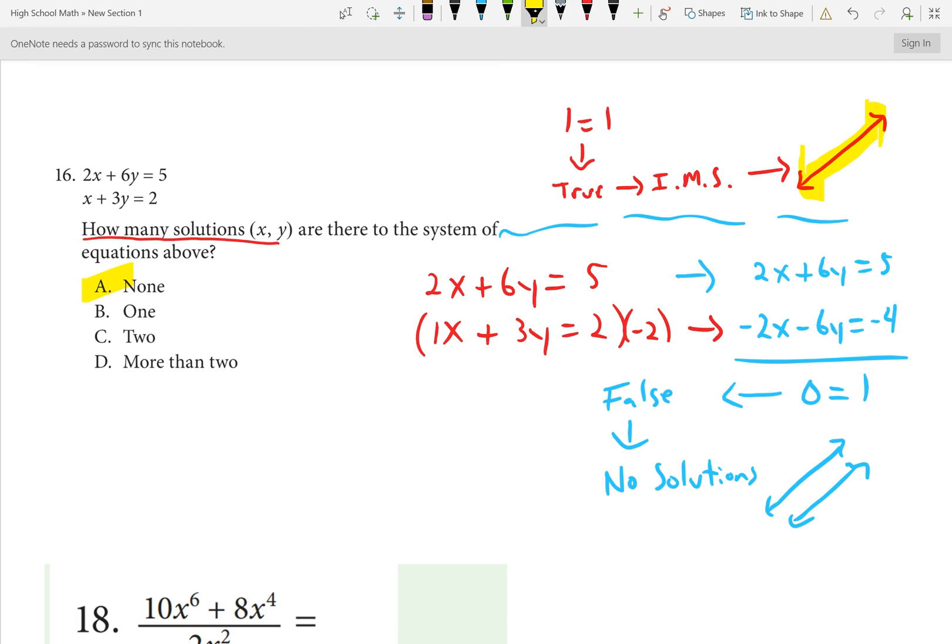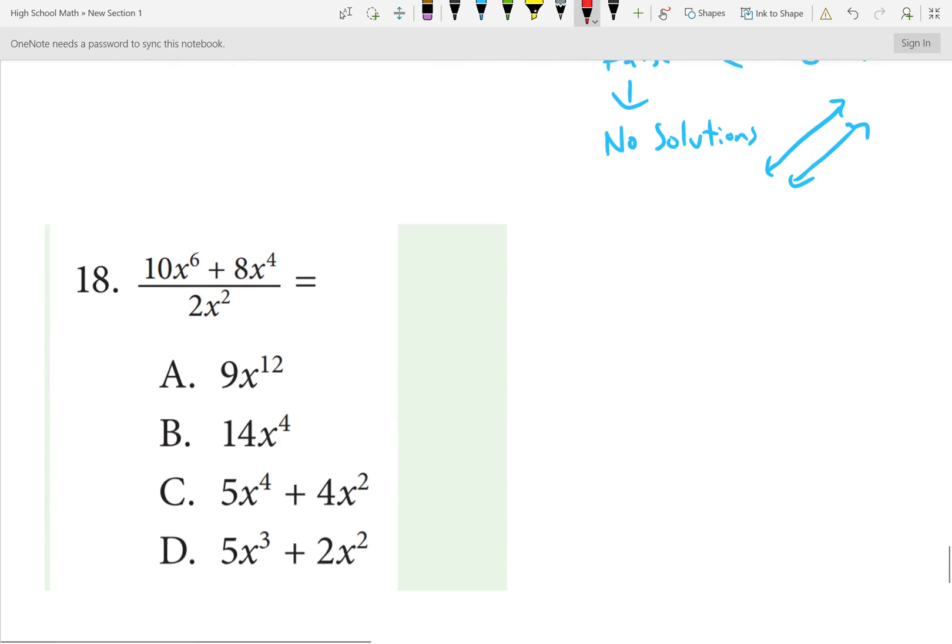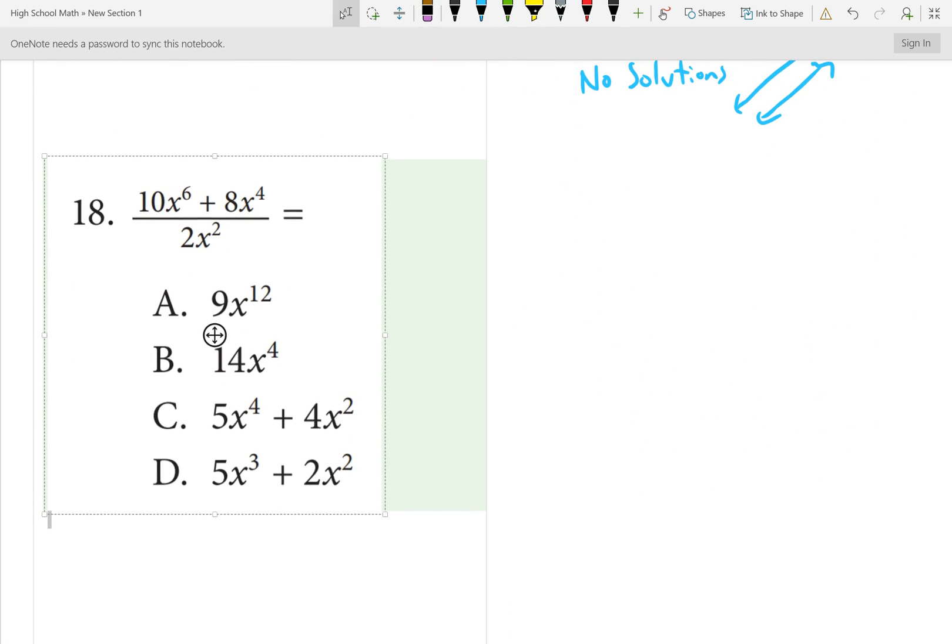Number 18. Another factoring problem. When factoring, the first thing we look for is a GCF. So in the top, the numerator, hopefully you see the GCF will be 2X to the fourth power because 10, 2 goes into 10 and 8. And when you're dealing with the variables, if they both have the variable, go to the least and take it all. 10 divide 2 is 5. X6 divide X4 is X squared. Our quotient rule says to subtract when dividing. Subtract the exponents. 8 divide 2 will be 4. X to the fourth divide X to the fourth is X to the zero. I don't have to put that. This is all over 2X squared.